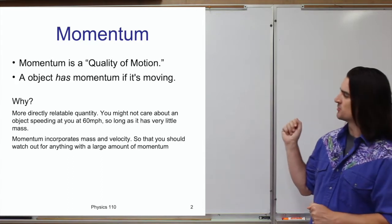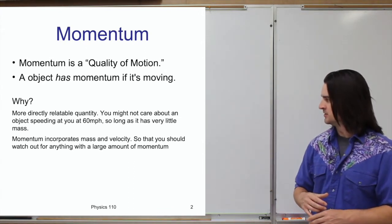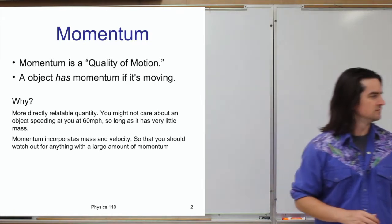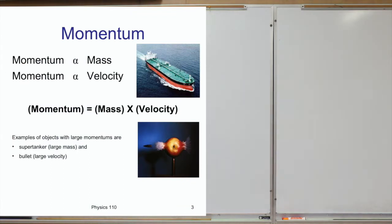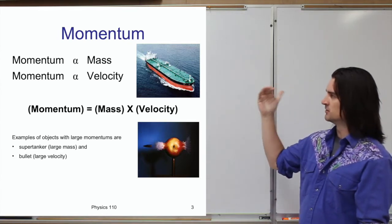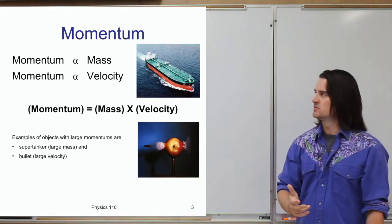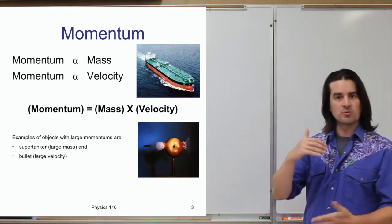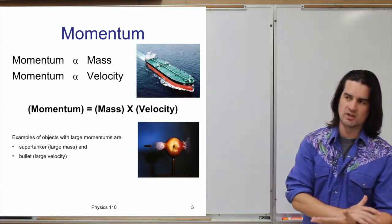Momentum is something that incorporates both mass and velocity — two things we've talked about already. If anything has a large amount of momentum, you've got to be aware of it; watch out for it. Momentum is proportional to its mass: a greater mass means greater momentum. The momentum of an object is also proportional to its velocity — a greater velocity gives greater momentum, and a lower velocity gives lower momentum.